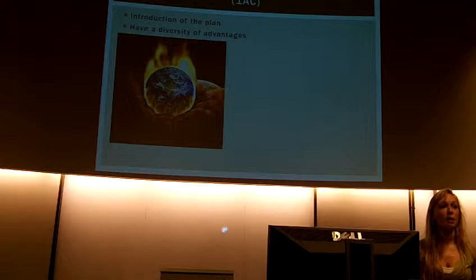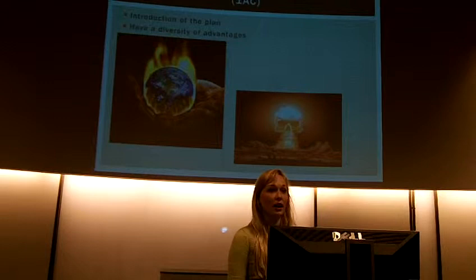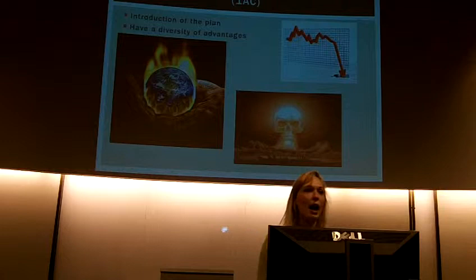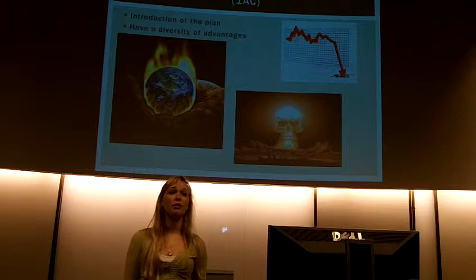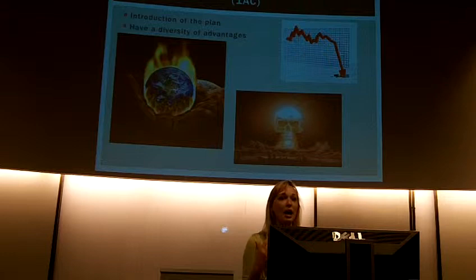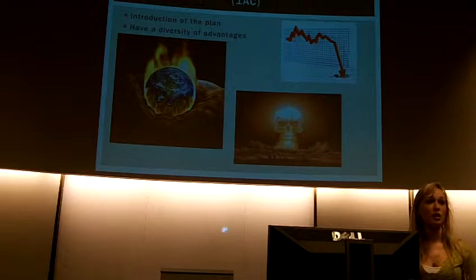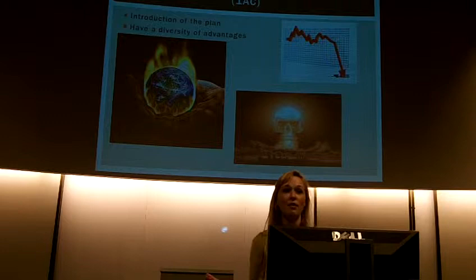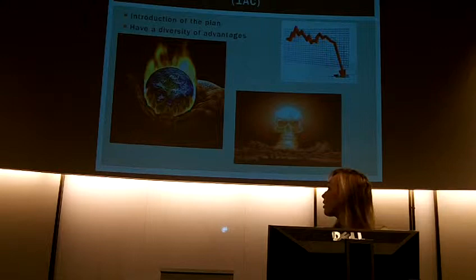Some 1ACs might have a warming advantage, some might have a nuclear war impact to an advantage, some may be economic collapse, and the list can go on because all the different advantages might have two to three impacts, maybe different combinations. Maybe they'll have one warming impact with lots of different sub-impacts, and then a second or third advantage. The 1AC wants to have a diversity of impacts so that you can use them and weigh them against the negative strategy.